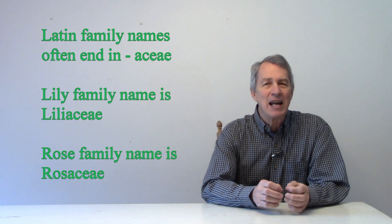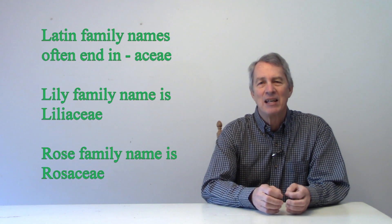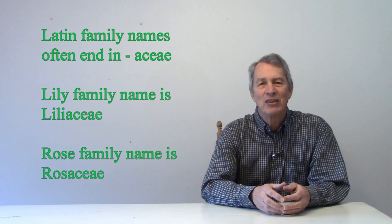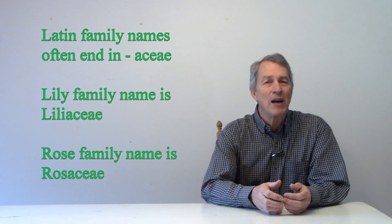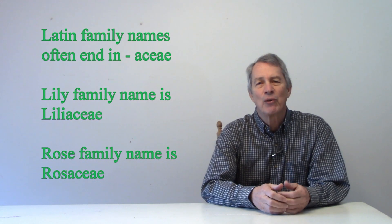A plant family is a single or group of genera that botanists feel are similar enough to be closely related. Very often, the Latin family name ends in the letters A-C-E-A-E, such as Liliaceae for the lily family and Rosaceae for the roses.